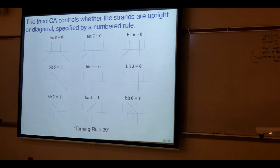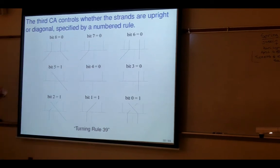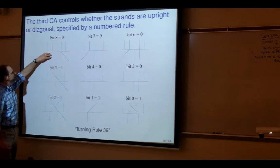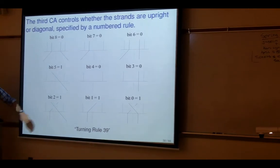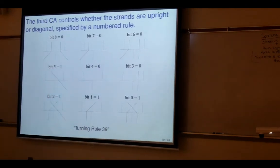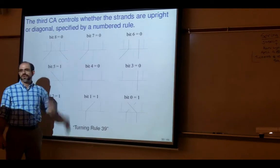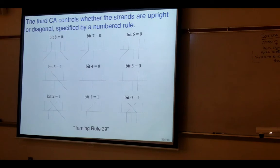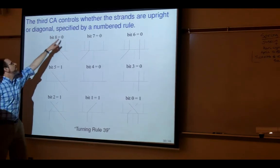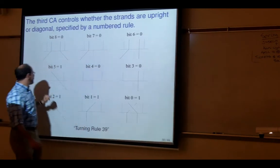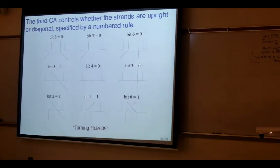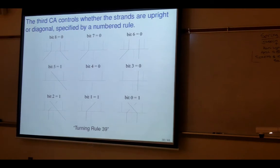The third cellular automata rule is a little more interesting and controls whether the strands are upright or diagonal. The key question is whether the strands below are upright, diagonal, or missing. The strand on the left could be diagonal, missing, or upright — likewise for the right strand — giving nine possibilities. The zero output means the strand will be straight, and the one means it will be slanted.